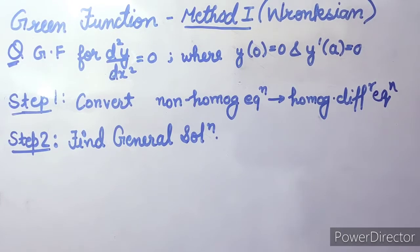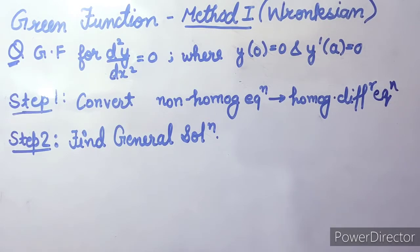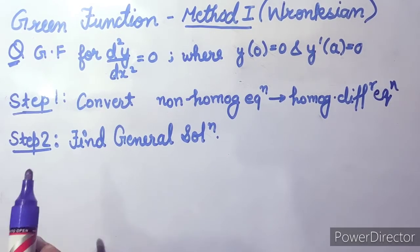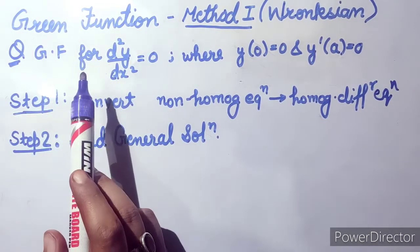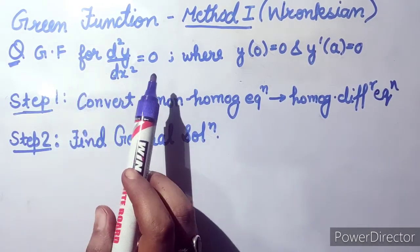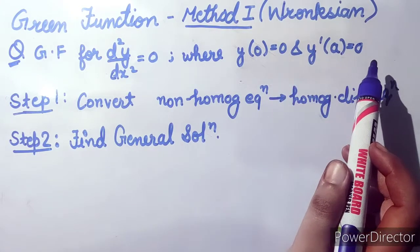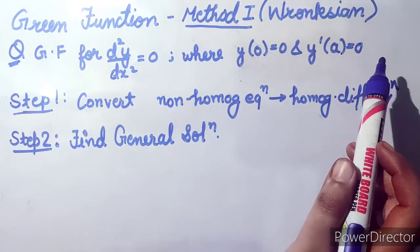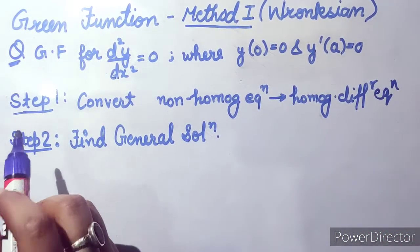Our first method is the Wronskian method. Let's see how we can solve the Green function for any particular differential equation using this method. The question is to find the Green function for a given differential equation with specified boundary conditions.